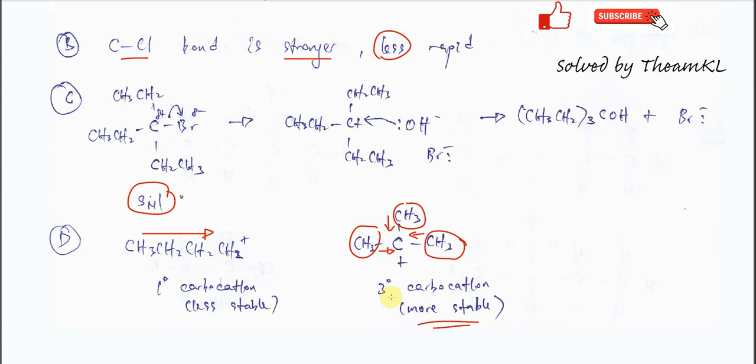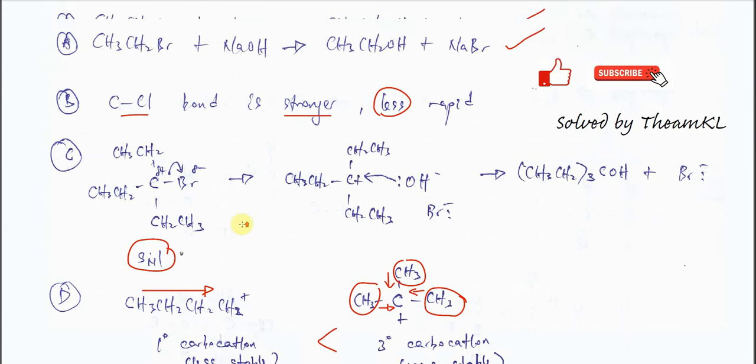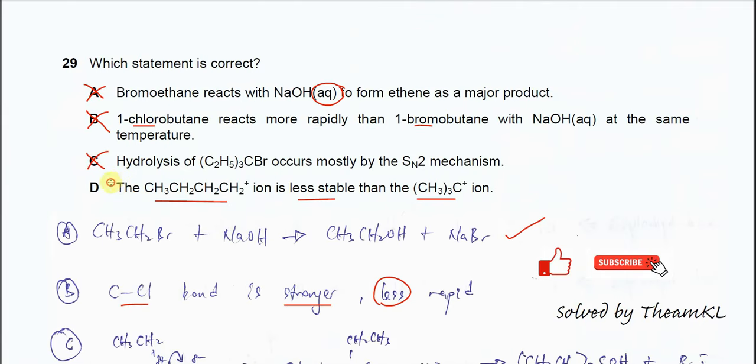The tertiary carbocation is more stable than the primary carbocation. That's why the answer is D. Okay, that's all. Thank you.